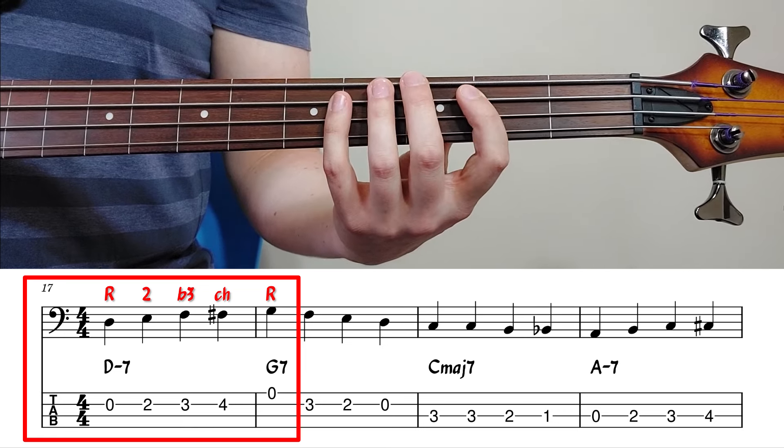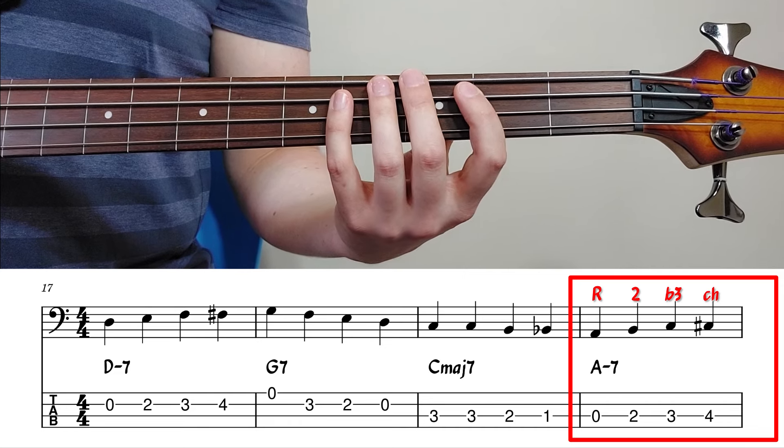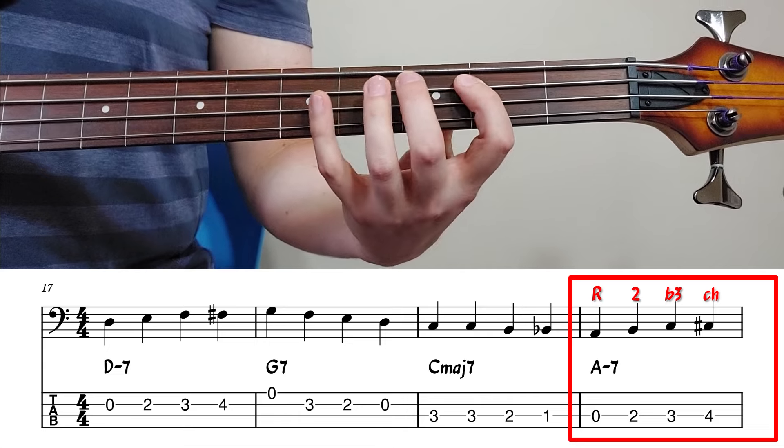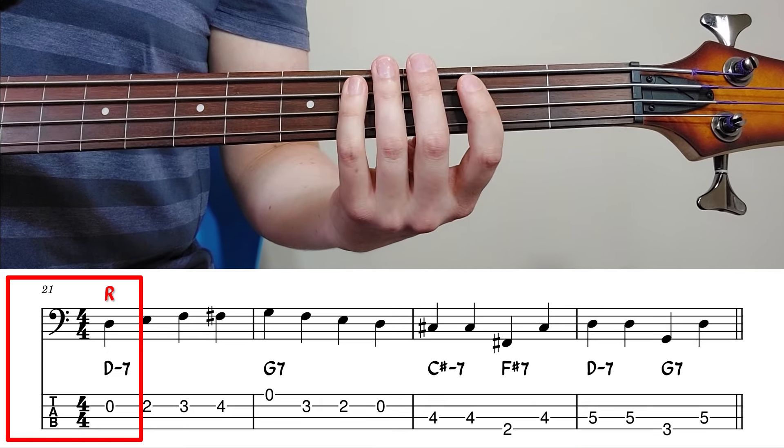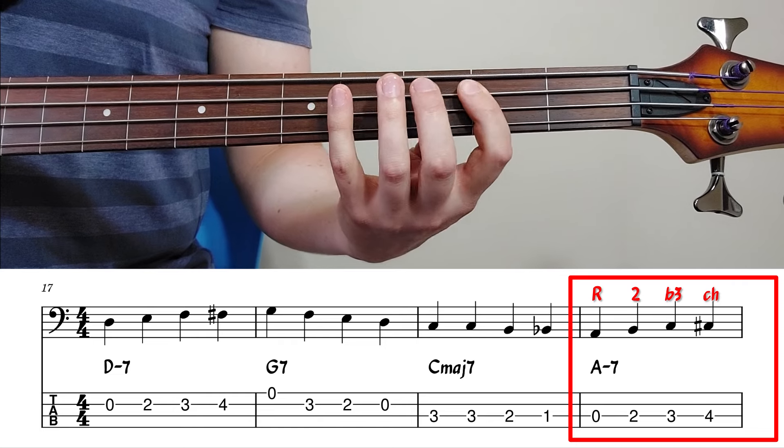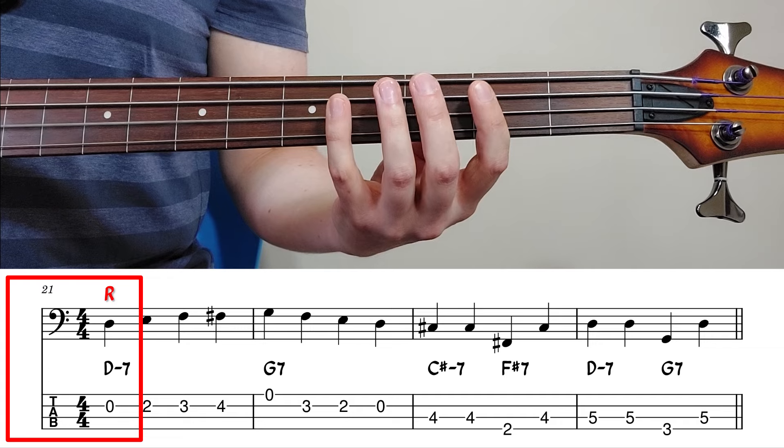The same line is played again, this time over A minor 7, resolving to D minor 7. So we're playing root, 2nd, minor 3rd, chromatic to the root of D minor.